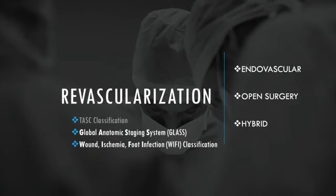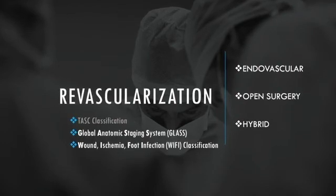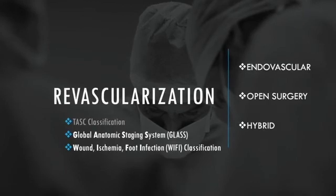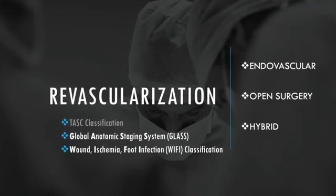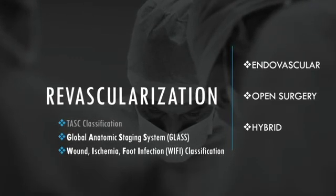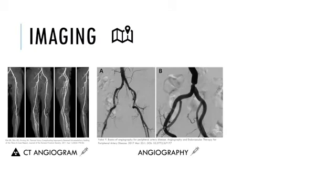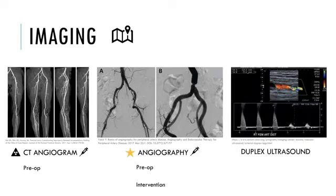The Global Anatomic Staging System, or GLASS, looks at the distribution and severity of lesions along the whole limb and grades them against the chances of success with endovascular treatment. The WIfI classification grades the severity of wounds, foot infection, and ischemia to gauge the severity of limb threat and risk of amputation. Prior to revascularization, imaging is needed to assess the exact anatomic location and extent of disease. CT angiogram and conventional angiography both require contrast but provide a detailed map for surgical planning. Conventional angiography is the gold standard, better at assessing infrapopliteal vessels and also allows for endovascular interventions. Duplex ultrasound avoids contrast and radiation but is limited by body habitus and is often ordered for follow-up after revascularization.